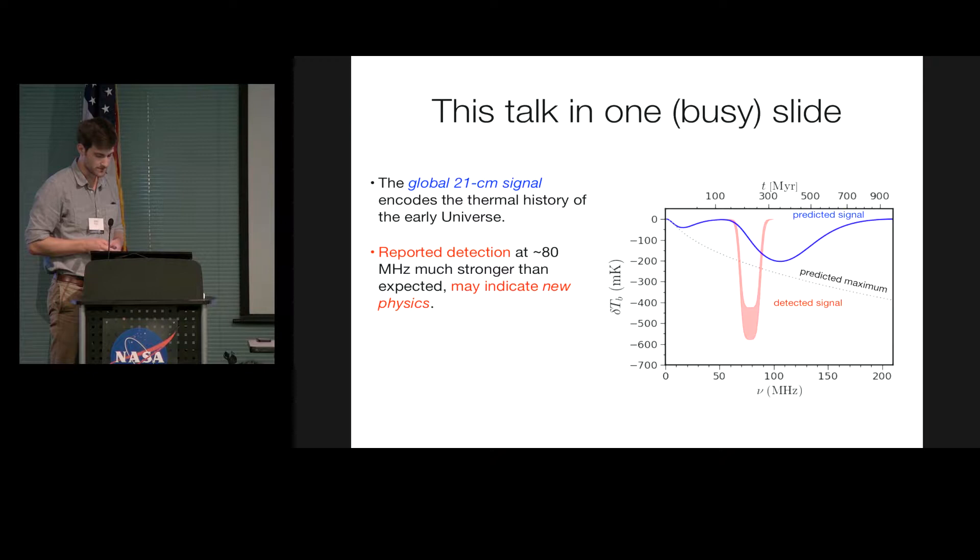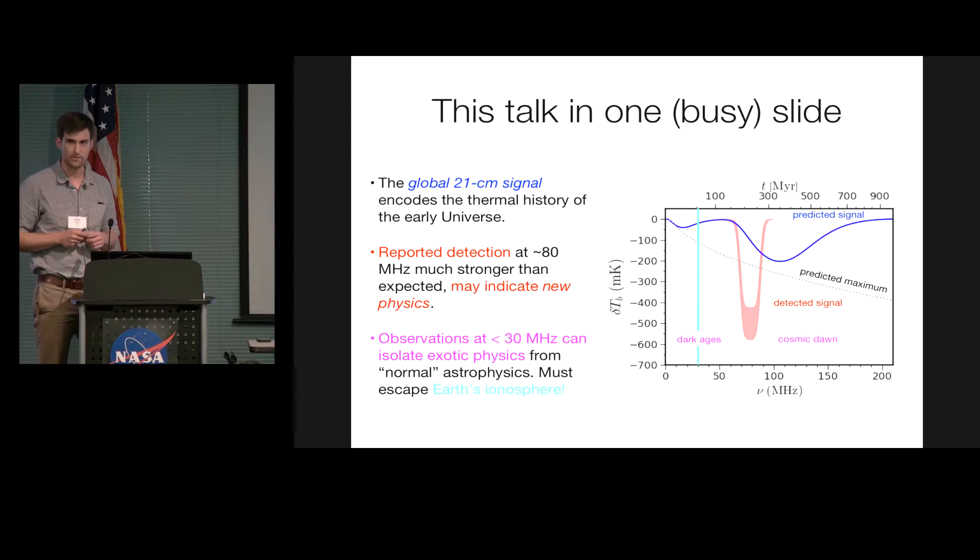And I think in order to figure out what's going on, we really need observations at very low frequencies. So, this signal, though, can be explained through exotic physics. It could have more mundane explanations having to do with kind of run-of-the-mill astrophysics that we just haven't thought hard enough about. But, if we try to measure the signal during epochs when astrophysics hasn't really started, which is to say, times before the first stars and galaxies form in the universe, we can really isolate the physics from the astrophysics.